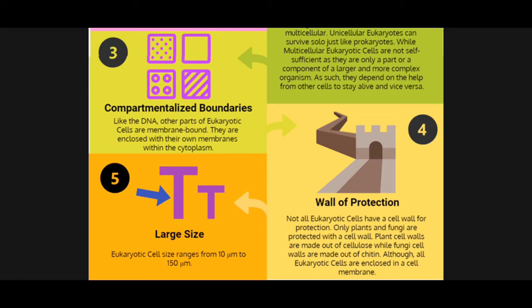Number four: wall of protection. Not all eukaryotic cells have a cell wall. Cell walls are only visible in plant and fungi eukaryotic cells. Animal cells are lacking a cell wall. However, what all these cell types have in common — prokaryotic or eukaryotic — is that they all have a cell membrane.